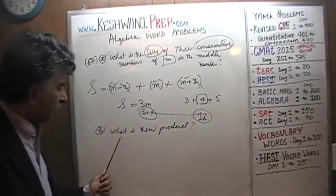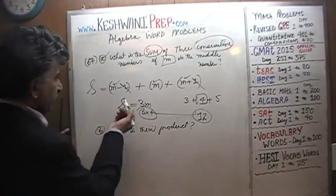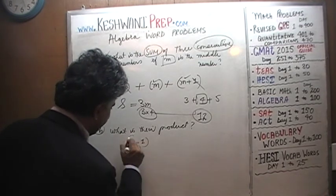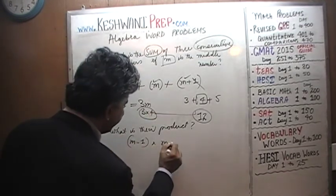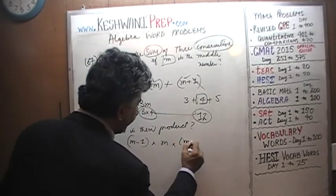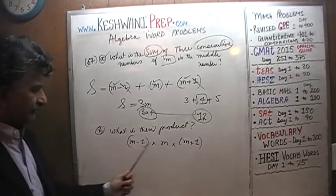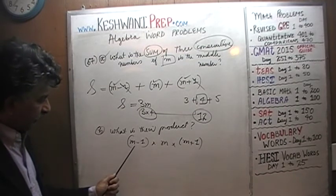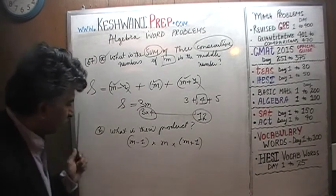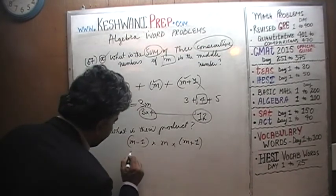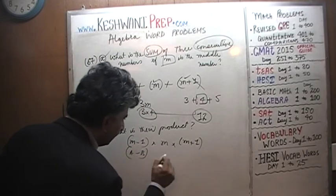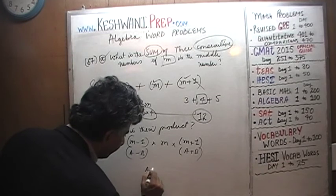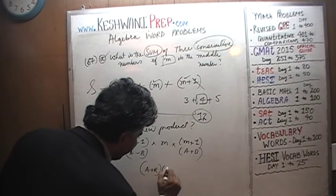What is their product? It's very simple. The first number was m minus 1, the next one was m, and the one after that is m plus 1. You can't just leave it like this — none of the answer choices are going to look like that. We have to understand that m minus 1 and m plus 1 are like a minus b and a plus b.